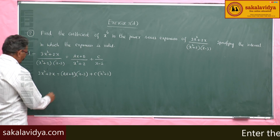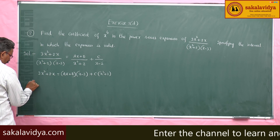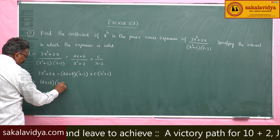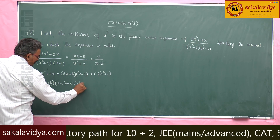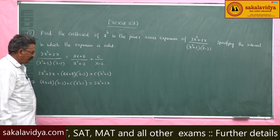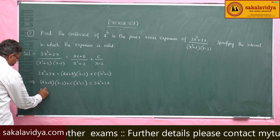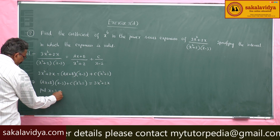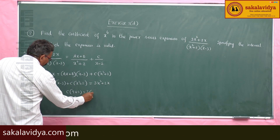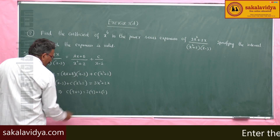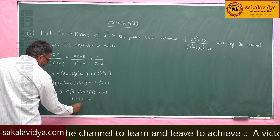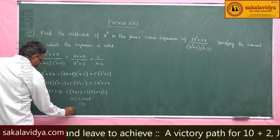Rearranging: (ax + b)(x - 3) + c(x² + 2) = 3x² + 2x. Put x = 3, so the first term becomes 0. Then c(9 + 2) = 3(9) + 2(3), giving 11c = 27 + 6 = 33. So c = 3.